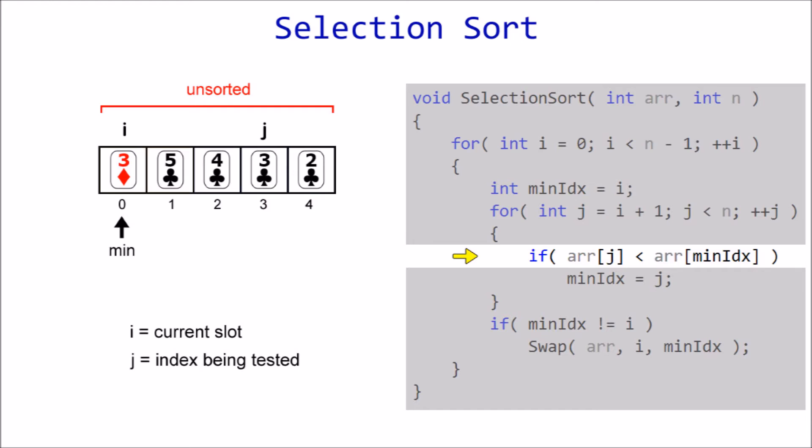Ah, finally, two is less than three, so we update the position of our minimum element to index four, which is the current value of J. Now we exit the inner loop and check to see if two is already in the current slot. If not, swap it with whatever is there. In this case, the three of diamonds. Two now becomes part of the sorted section and we start the whole process again.